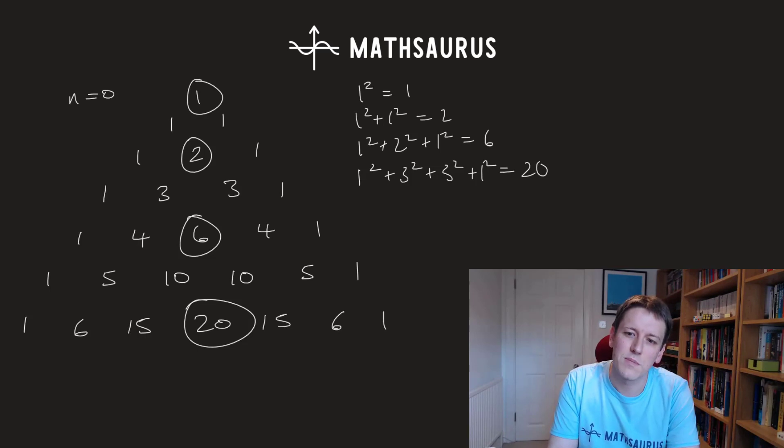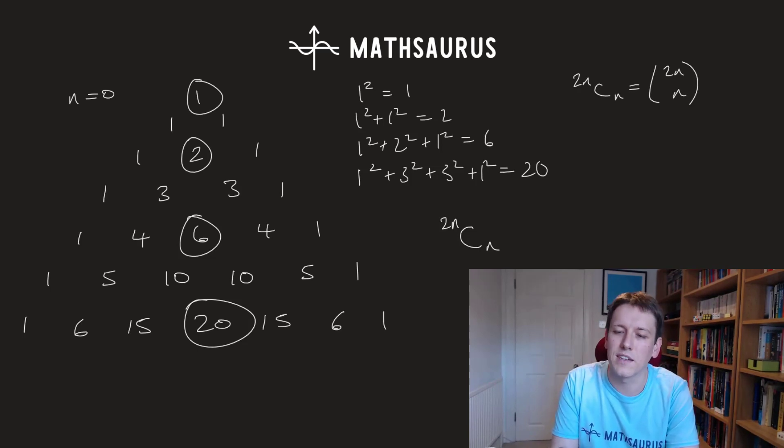So actually these would correspond in the combinatorial notation to the numbers 2n choose n. I'm using this notation but 2n choose n sometimes that's also written as 2n, n in a column like this.